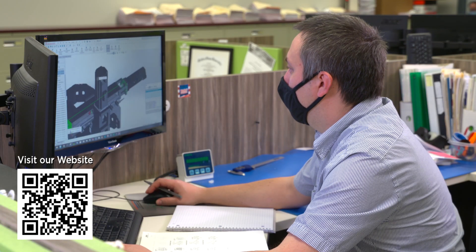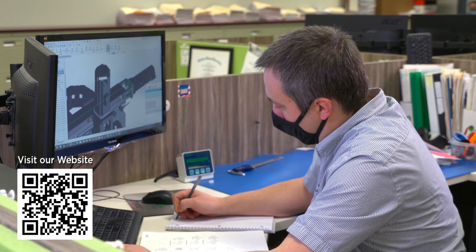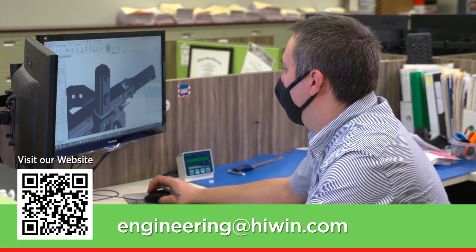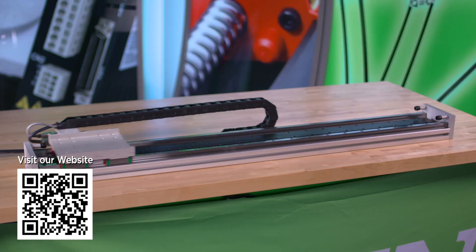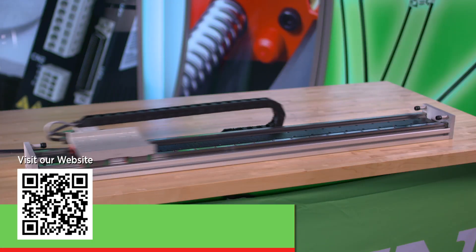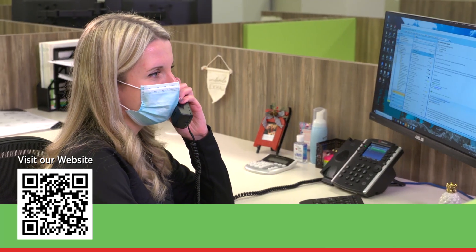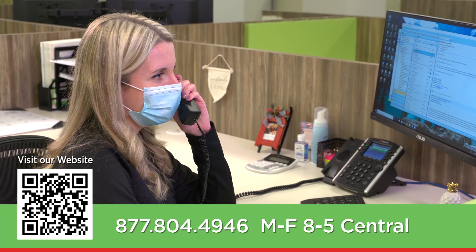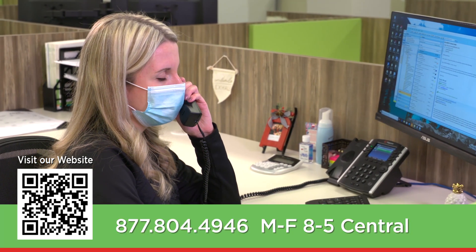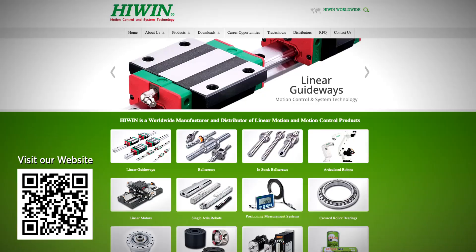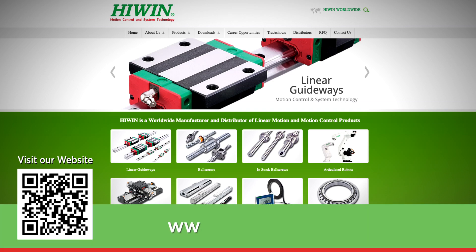Are you ready to speak with an experienced engineer about your specific requirements? Email engineering at hiwin.com. Ready to check pricing and availability? Email quotations at hiwin.com or call us 877-804-4946 Monday through Friday 8 to 5 central. Or you can visit our website via the QR code or type www.hiwin.us. Thank you for watching.